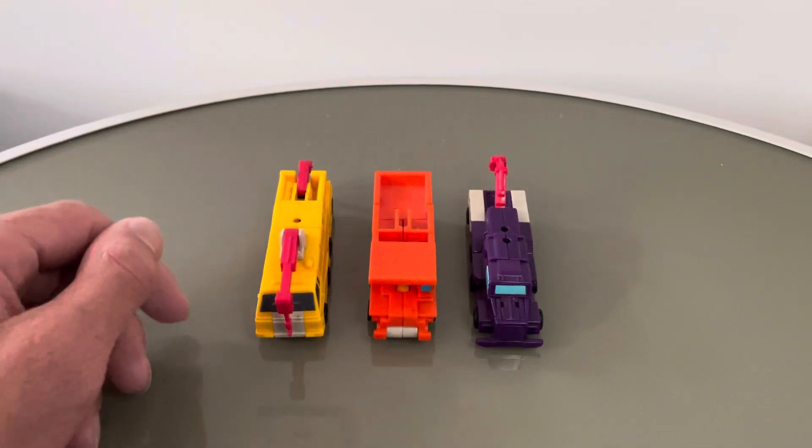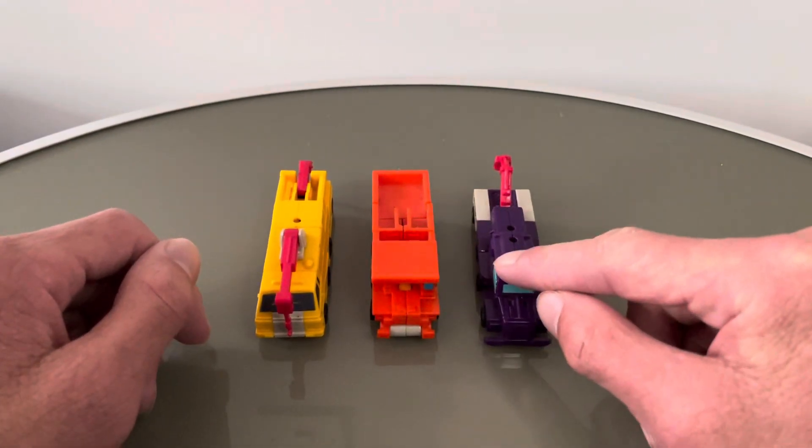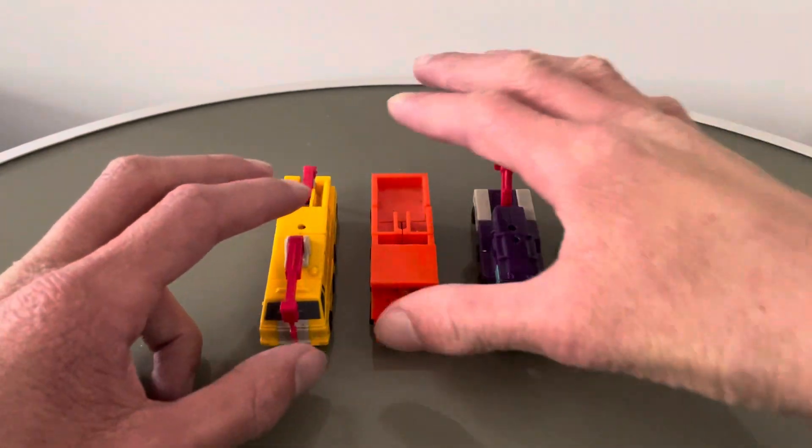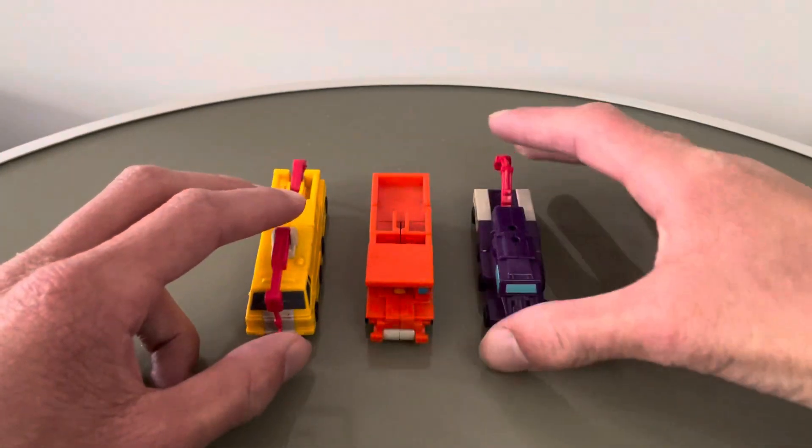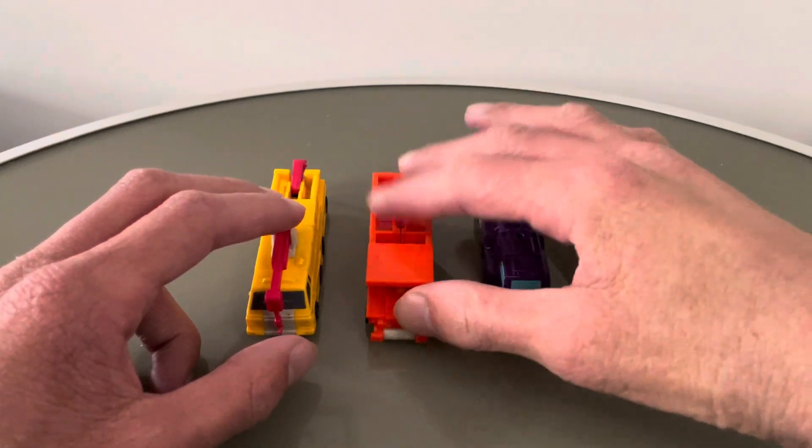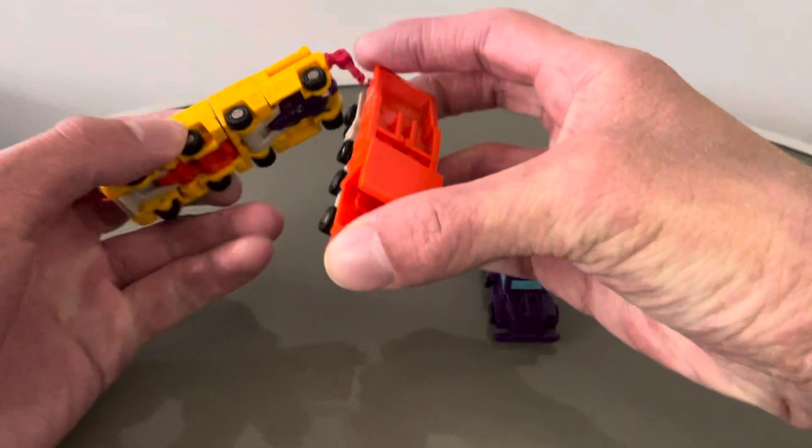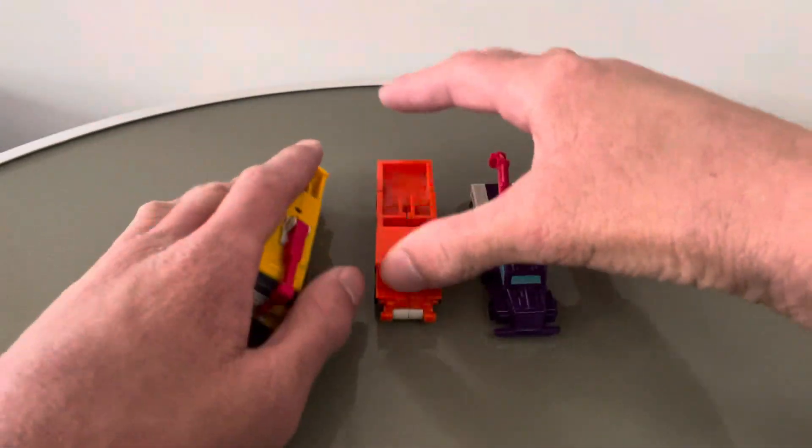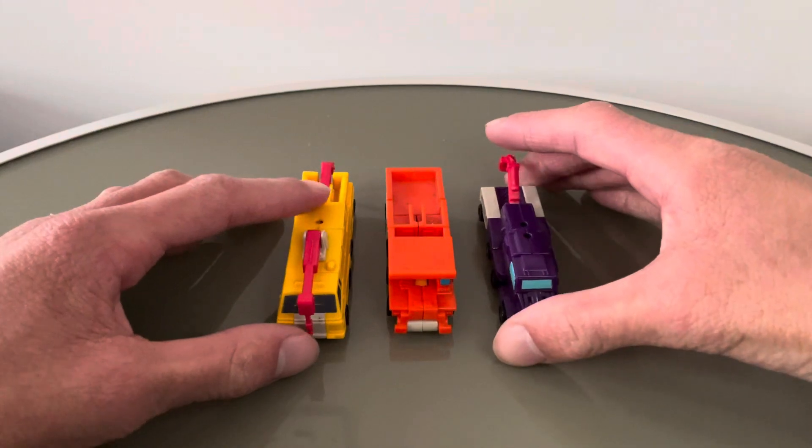These are some of my personal favorite MicroMasters. And I really like the cannon transport versions of these and the missile launcher versions of these. I really like the redecos they had for these two. So from left to right, we've got Stone Cruncher and Excavator which is the crane truck.